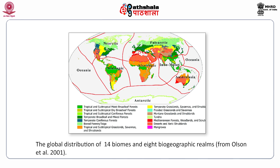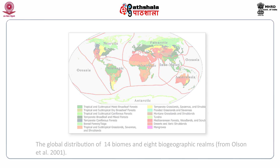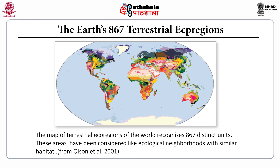This diagram shows the global distribution of 14 biomes and 8 biogeographical realms. Some of the biomes shown include tropical and subtropical moist broadleaf forests, temperate broadleaf and mixed forests, boreal forests, temperate grasslands, mountain grasslands, and Mediterranean forests. The map of terrestrial ecoregions of the world recognizes 867 distinct units, considered as ecological neighbourhoods with similar habitats.